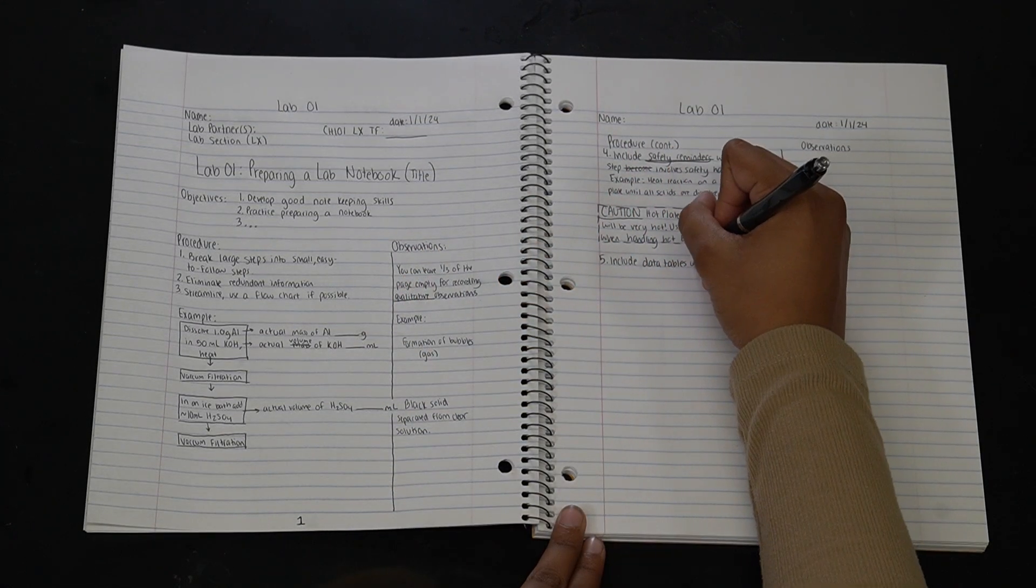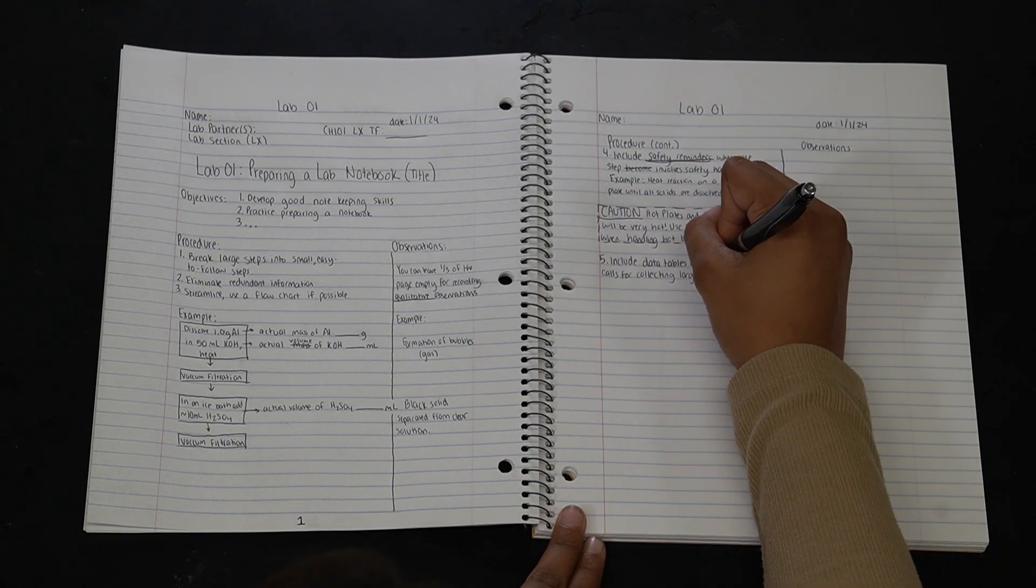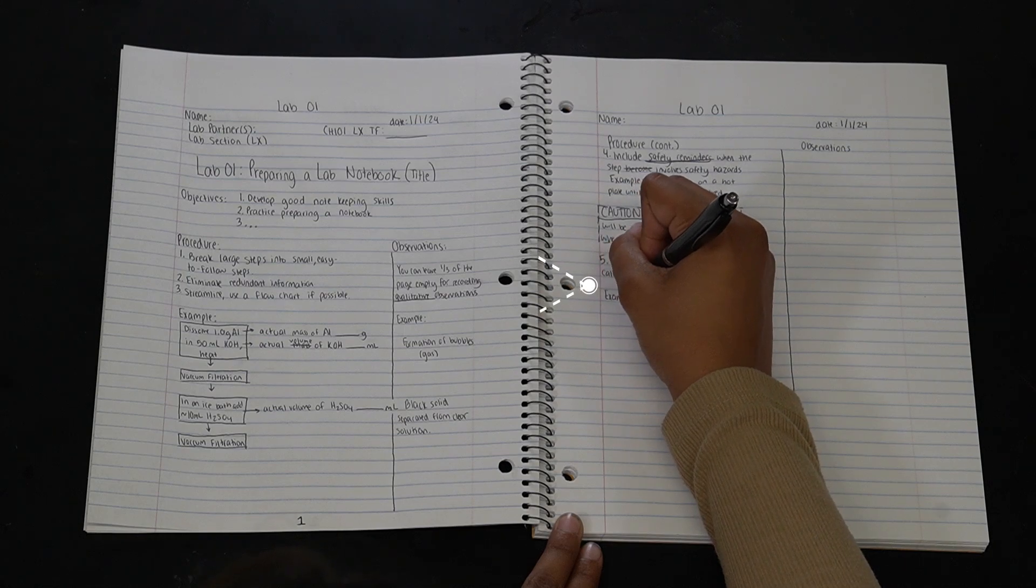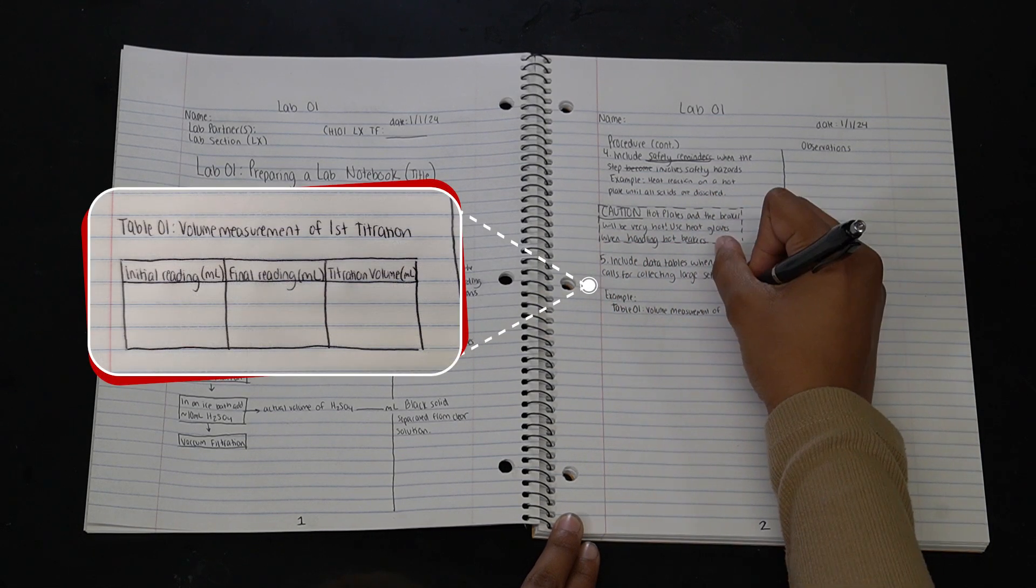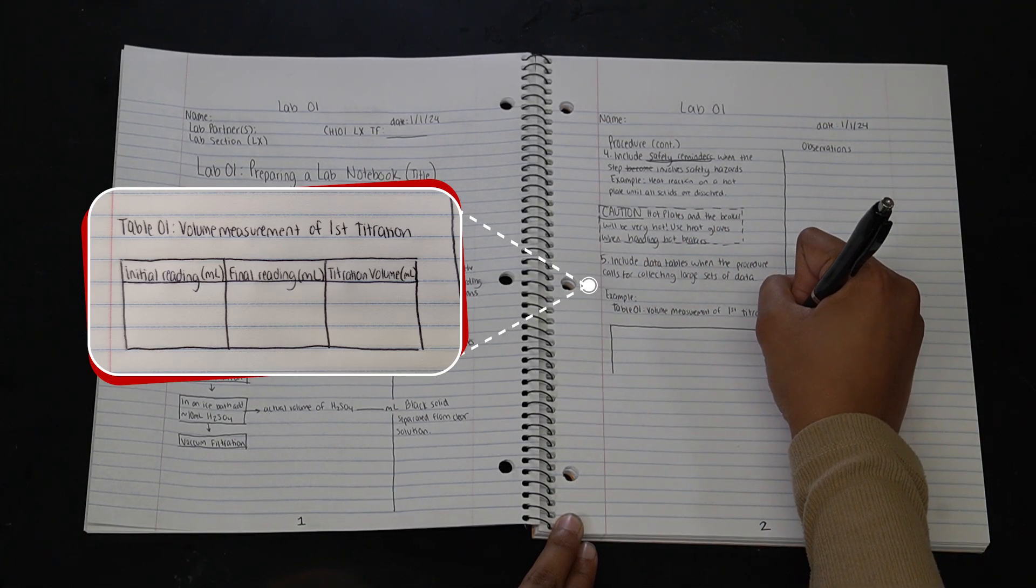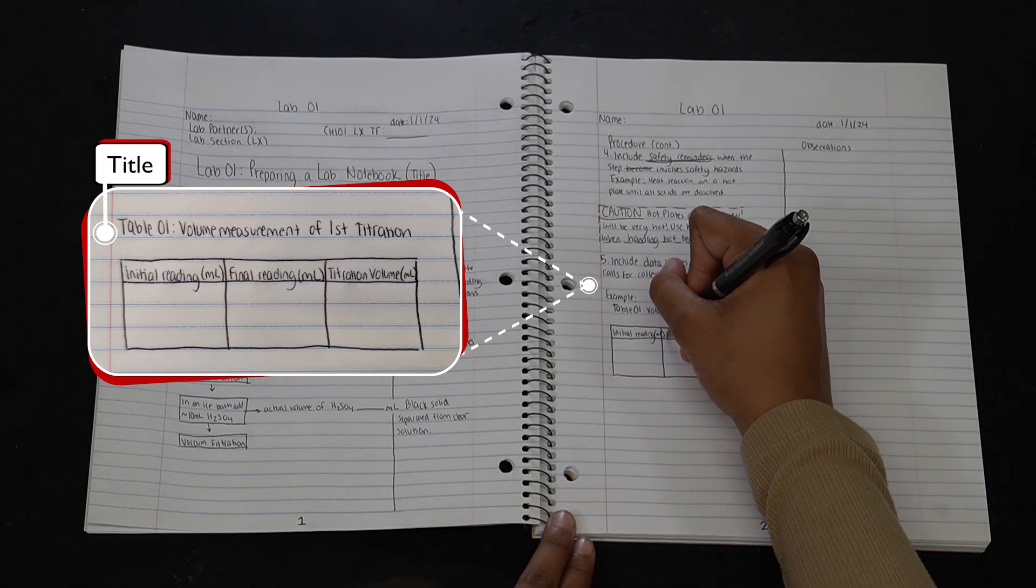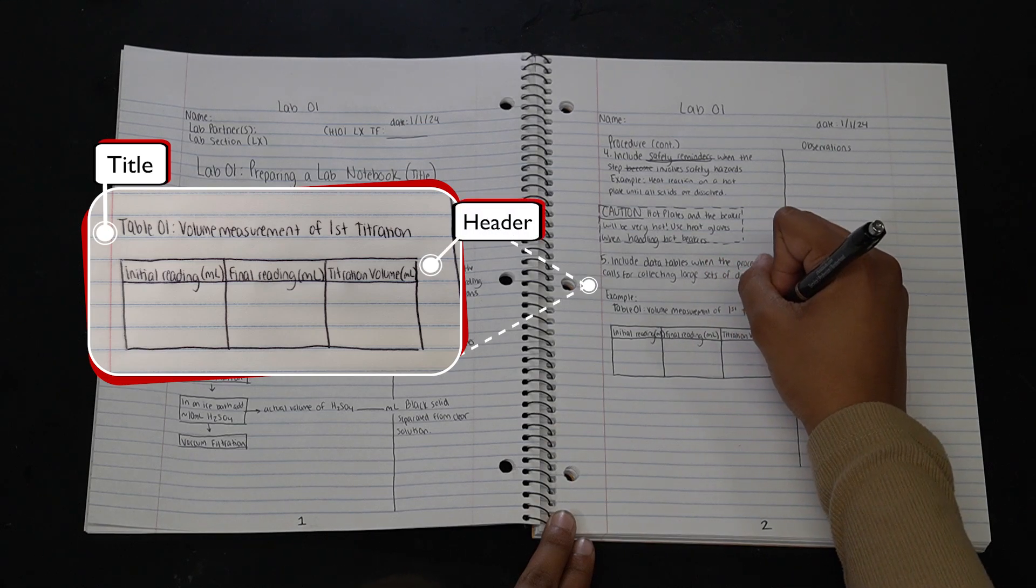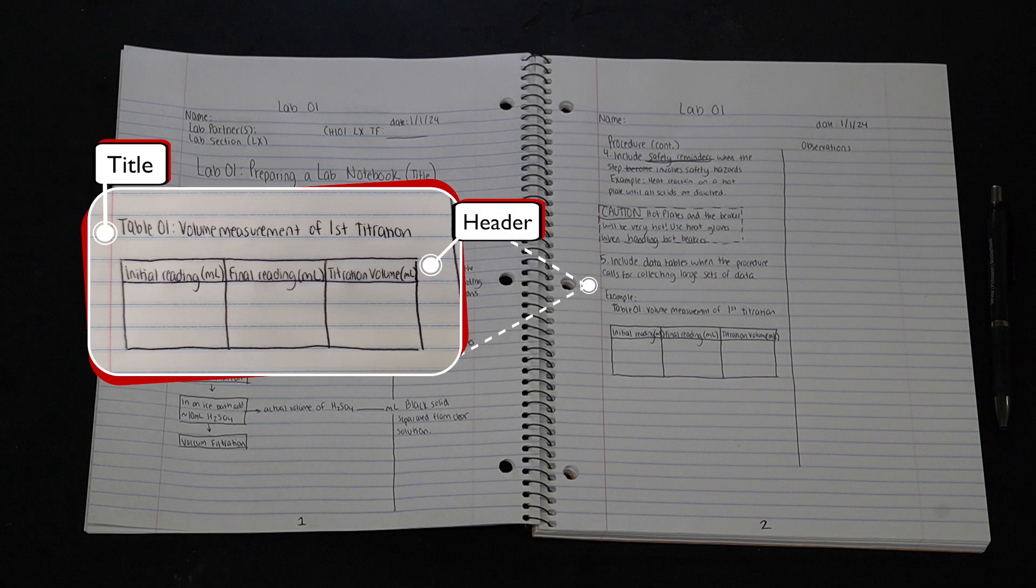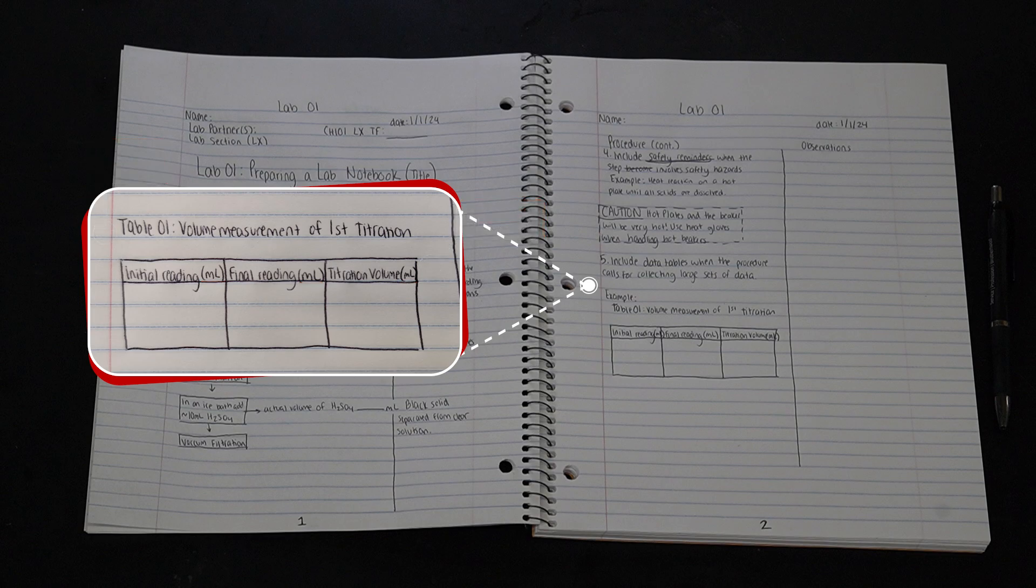If we anticipate that extensive data will be collected during a step, then we should include data tables to record the measurement. Data tables help us organize the measurements, which also makes it easier for the post-lab data analysis. There are a few key points in designing the data tables. First, each table should have a title so we know exactly what this table is designed for. The header row should include the parameters we will measure, and we get information about which parameters to measure based on our understanding of the procedure. For each parameter, we should also include its corresponding units so that when recording the data, we do not need to repeat the units for each recorded number.